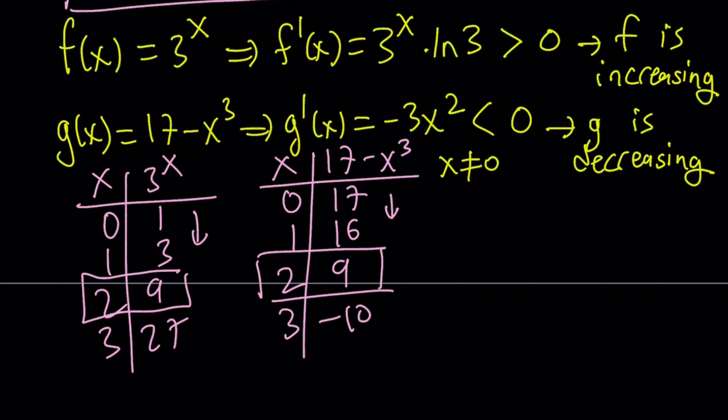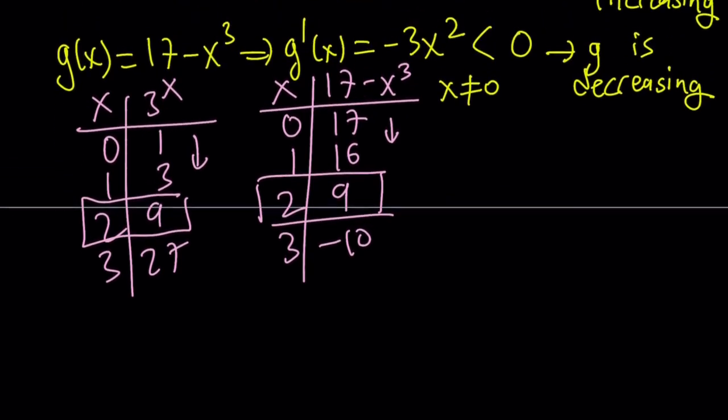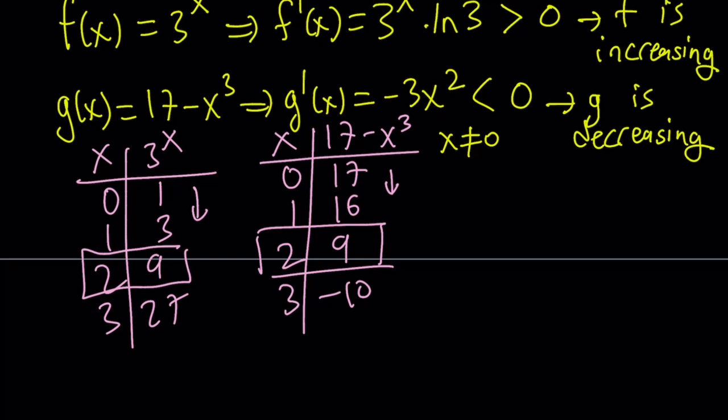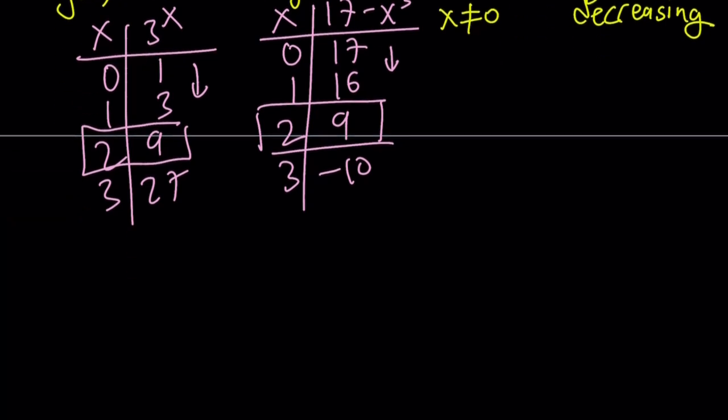So it's kind of like guess and check. I know it's not algebraic, but there's nothing you can do because this is non-standard. But it's easy to guess on a certain interval. So x equals 2 is the only solution. There's no other solution because one function is increasing, the other one is decreasing.